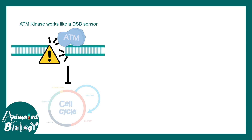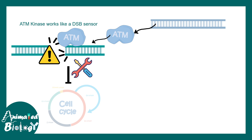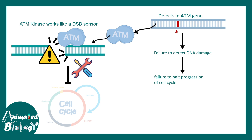Obviously if there is a problem in the sensing mechanism, there could be a problem in the overall cell cycle. ATM is encoded by a specific gene, and in Ataxia Telangiectasia this particular gene is mutated. That means a functional ATM product is not produced. As a result, there is a failure to detect DNA damage, which results in failure to halt the progression of the cell cycle, and that can cause so many mutations in the genome.